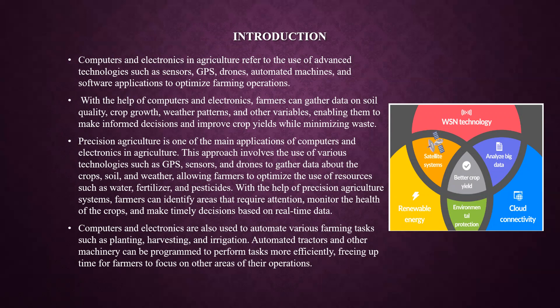How is it helpful for farmers? They can gather data on soil quality, crop growth, and weather patterns, and can improve crop yields while minimizing waste. Precision agriculture plays an important application of computers and electronics in agriculture. It helps farmers to identify areas that require attention, monitor the health of crops, and make decisions based on real-time data.